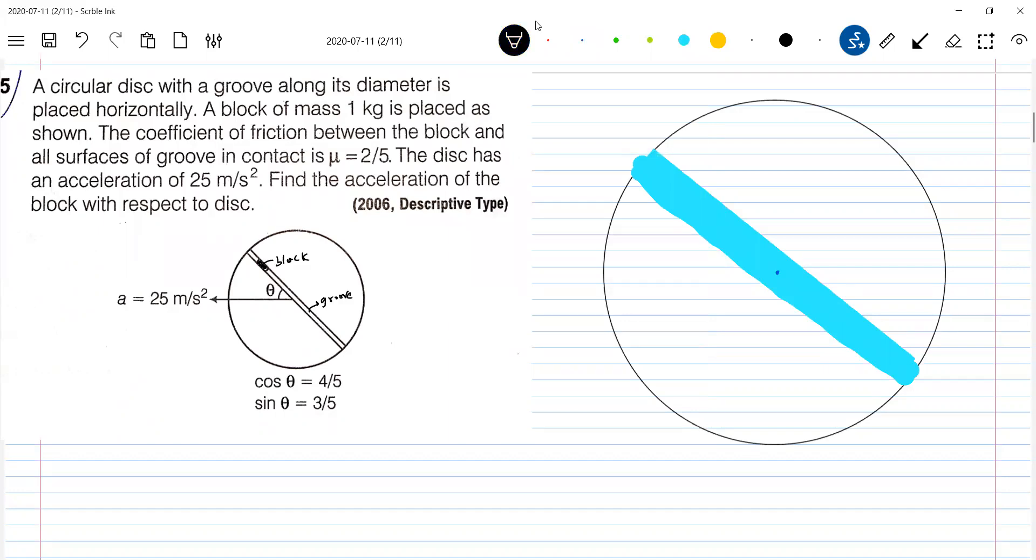This is the center of the groove, where is the block? The block is somewhere here, and there is friction at all that one, and it is being moved with an acceleration a. This theta is given for our calculation purpose, cos theta, sin theta.